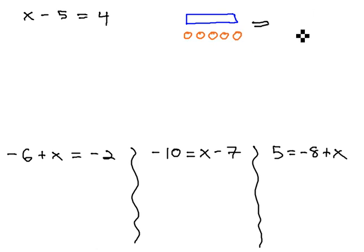On the other side of the equation is a 4, 4 positives, so we'll put 4 positive circles over here.